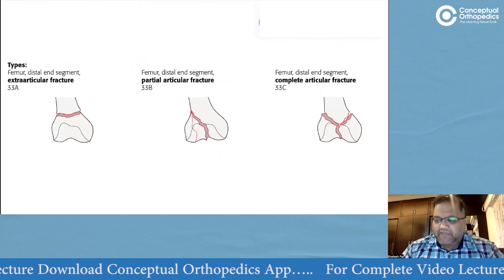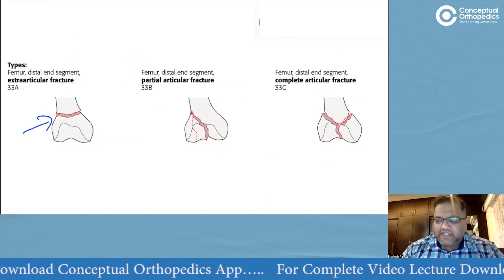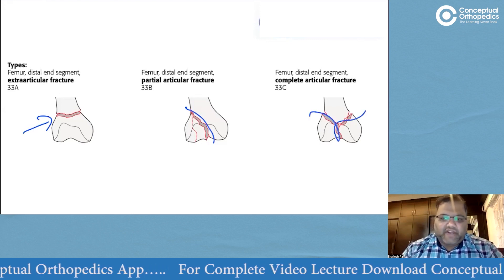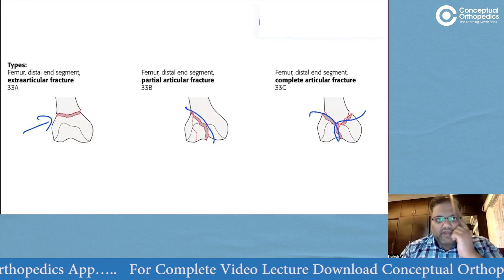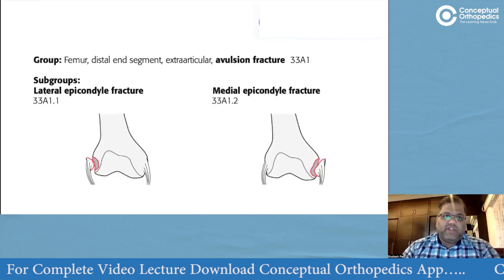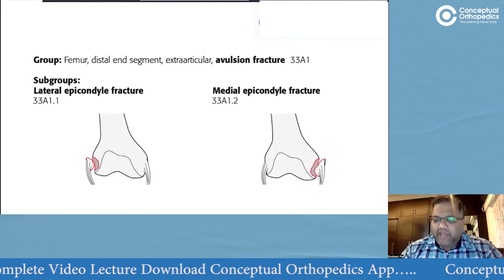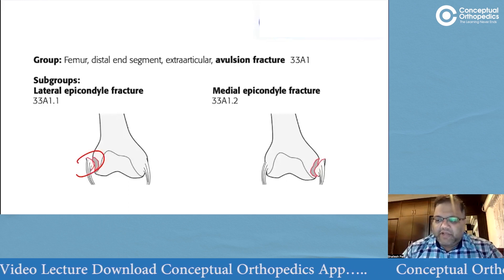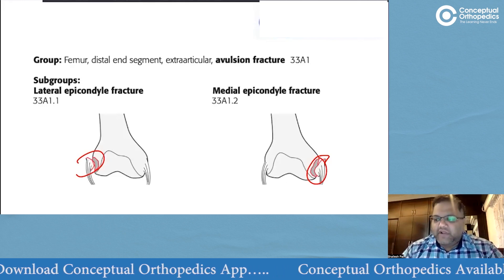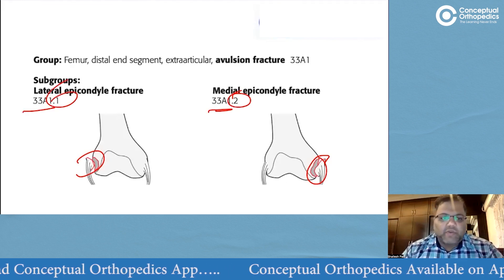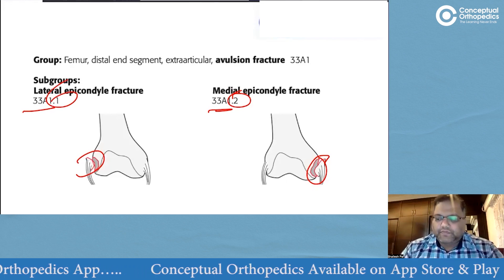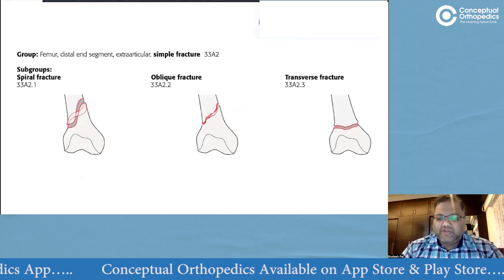Distal femur follows the generic AO pattern: Type A is extraarticular, Type B is partial articular, and Type C is intraarticular. Whenever there is an avulsion injury, it becomes A1. A lateral epicondylar avulsion or a medial epicondylar avulsion both become A1; the fifth box distinguishes them — lateral is 1 and medial is 2.